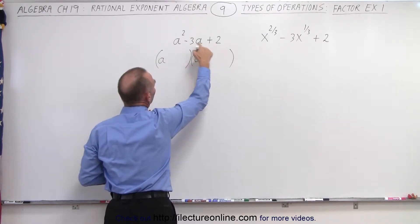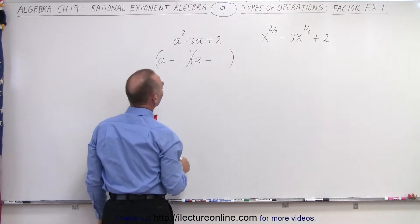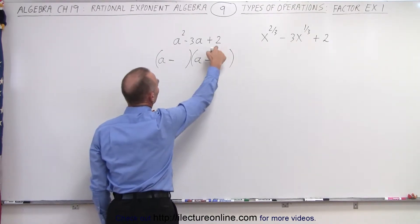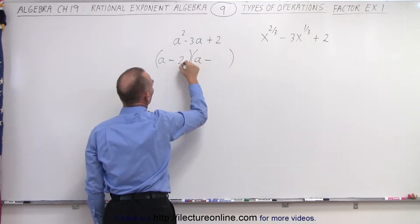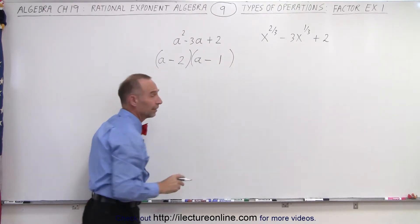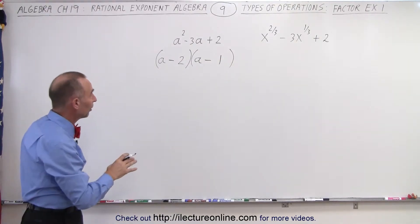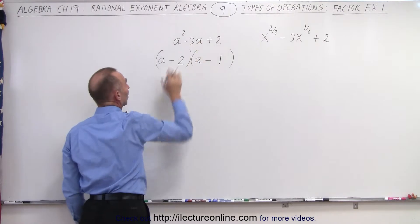Notice if this is positive and this is negative, the signs must both be negative. When I multiply, I get 2. When I add, I get 3. That means 2 and 1 will do the trick. That will give us the correct result. This is the factored form of this trinomial.